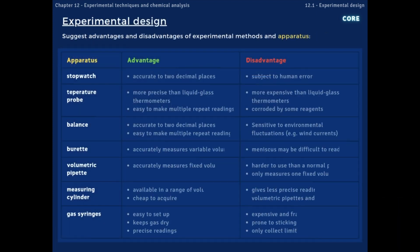Evaluating the strengths and limitations of a piece of apparatus is an important part of planning a successful experiment. Some of the advantages and disadvantages of laboratory apparatus are displayed in the table.